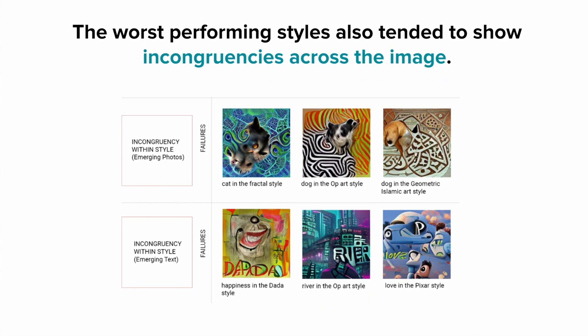On the flip side, the worst-performing styles had incongruencies—either emergent photos that clashed with the art style being generated, or text emerging within the image. For example, abstract art styles would have dogs and cats emerging from them, creating conflict with photorealism. Or, for the Dada style, the word 'Dada' would literally appear in the image because the AI is fooled into thinking it's an even more convincing depiction of the style. This is something AI models are still grappling with today.